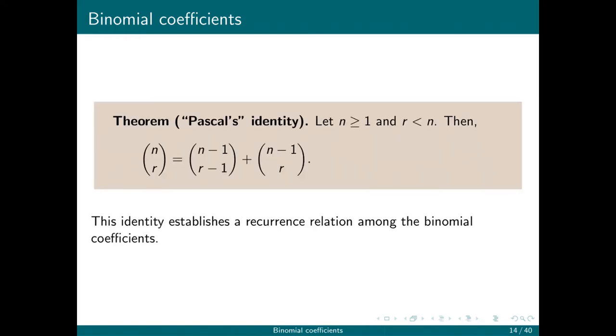Here is the theorem referred to as Pascal's identity. It says that n choose r is equal to n minus 1 choose r minus 1 plus n minus 1 choose r. The idea is that this is a recurrence relation among the binomial coefficients. In order to know n choose r, I just need to know two of the coefficients that come before it.